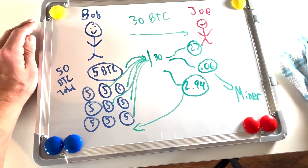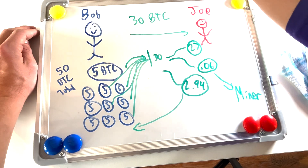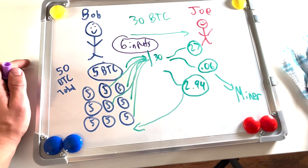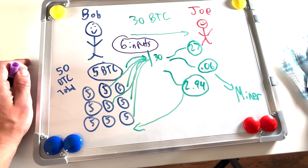Six of these 5 Bitcoin UTXOs, equaling 30 Bitcoin, are used as inputs for the transaction. Through these six inputs, three outputs are created: Joe gets a UTXO of 27 Bitcoin, the miner that processed the transaction receives a transaction fee of 0.06 BTC, and lastly 2.94 BTC remain from the 30 BTC used as inputs, so that 2.94 is sent back to Bob in the form of a fresh UTXO. As you'll notice, the transaction fee was higher for this transaction than it was for Bob's transaction to Chad.